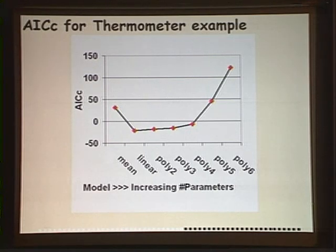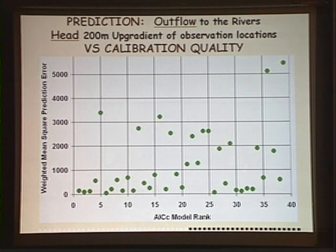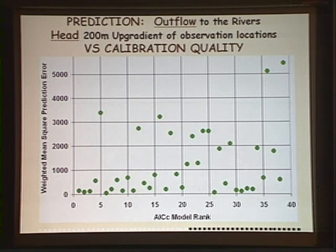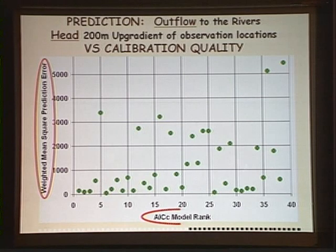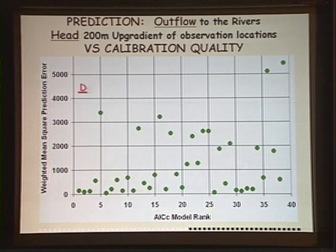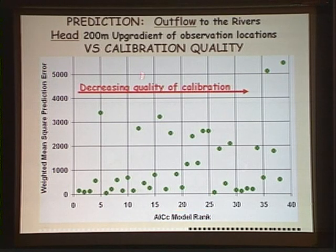The models that are not very good representations — the mean and the sixth order polynomial — are clearly unacceptable given your AIC measure. If we take our groundwater models and order them by their AIC, we can compare their weighted mean square prediction error to their quality of calibration. Decreasing quality of calibration is to the right, and this is a little disappointing.